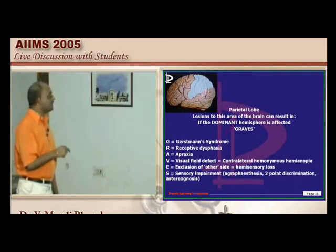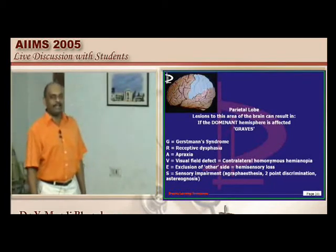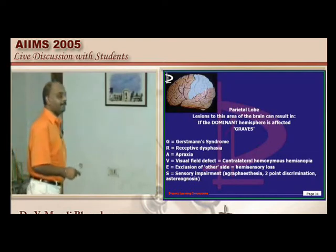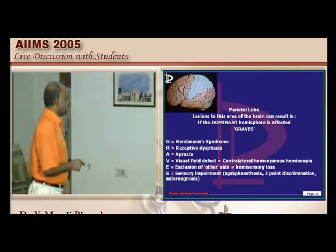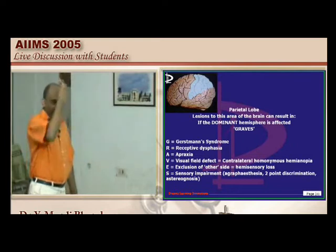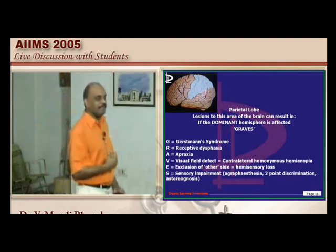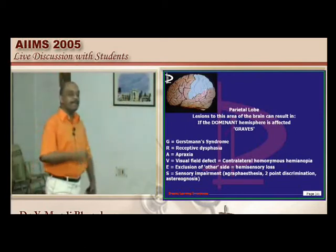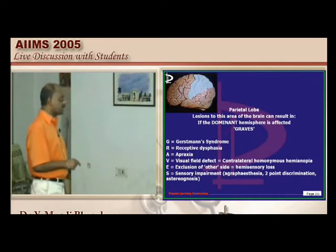Parietal lobe lesions: the mnemonic GRAVES for dominant parietal lobe — G for Gerstmann syndrome, R for receptive dysphasia, A for apraxia, V for visual field defect (contralateral homonymous hemianopia), E for exclusion of the other side (hemisensory loss), S for sensory impairment. Tests include agraphesthesia, two-point discrimination loss, and loss of stereognosis, because the parietal lobe processes discriminatory senses — position, vibration, and touch.